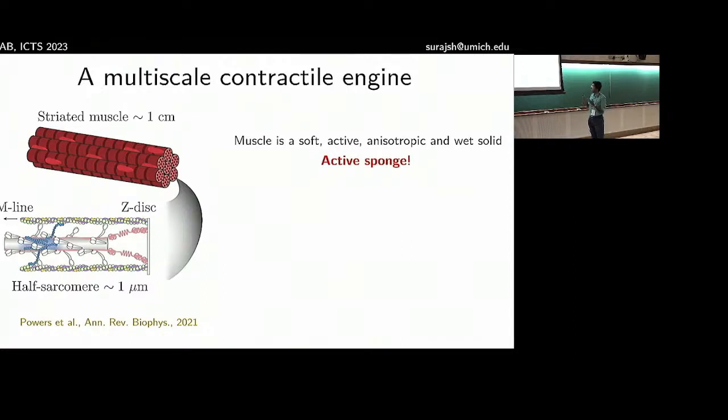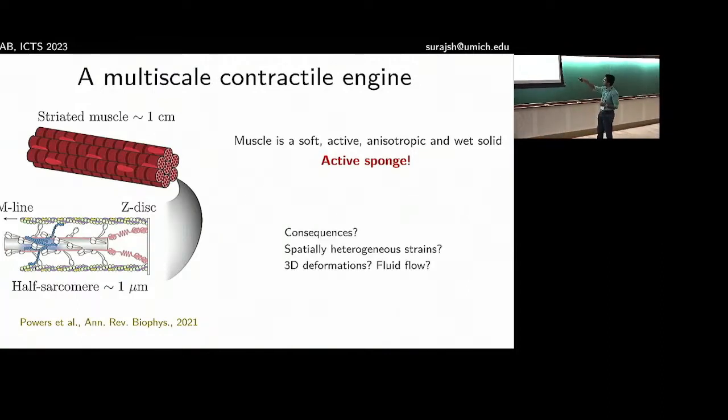The question is how do we do that? What are the evidences for this? Can we make sense of this with the existing experimental evidence? Some of the consequences of such a coarse-grained picture, as I already said, is that you cannot have contractions that are global, but you can do it locally. That means deformations must be spatially heterogeneous. You must have gradients. You have three-dimensional deformations. It's not just a uniaxial system. Naturally, within this picture, we expect there should be fluid flow and fluid redistribution within the fiber.